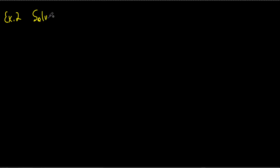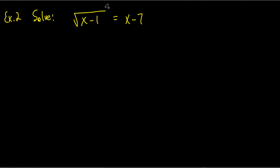On example 1 we didn't really need to check, but watch this next problem — example 2 gets a little weird. This time it's a square root, not a cube root: square root of x minus 1 equals x minus 7. The biggest problem is this square root. To get rid of it, we square both sides — just like we did on the first problem, except we square instead of cube because it's a square root. It's very important that you put the whole right side in parentheses and square it.